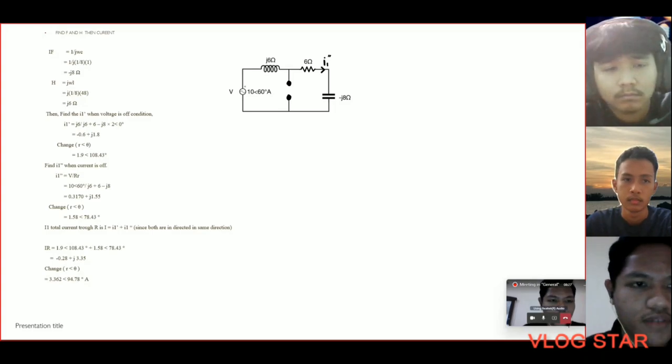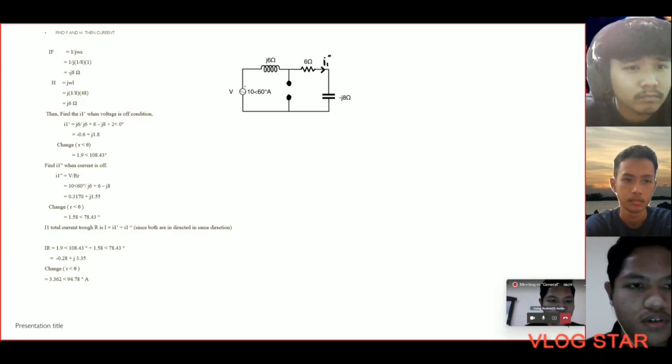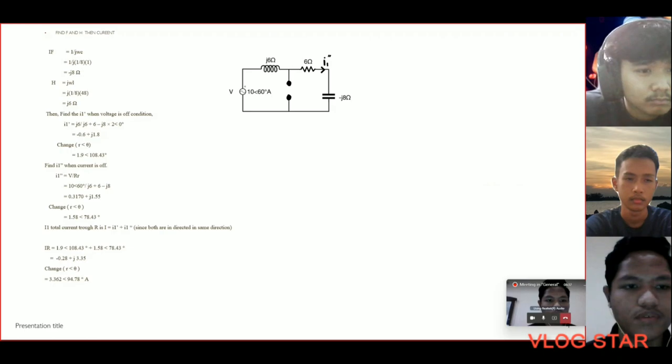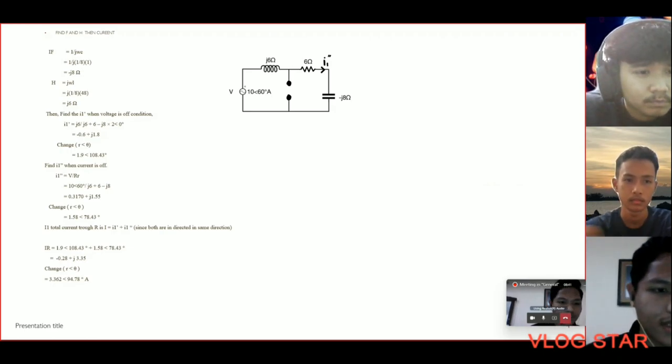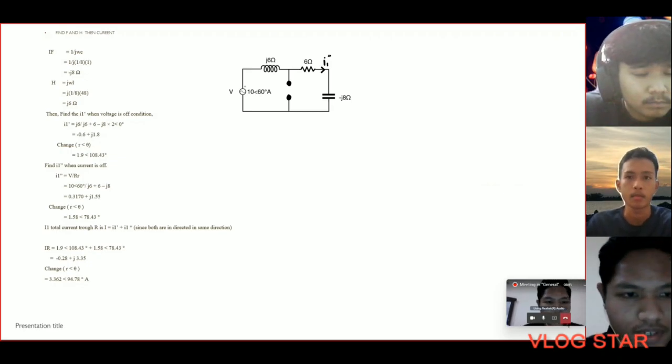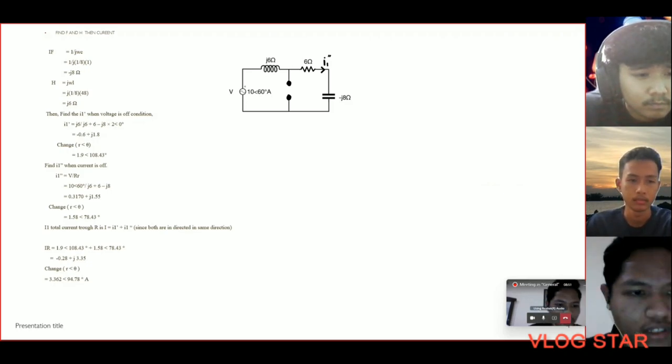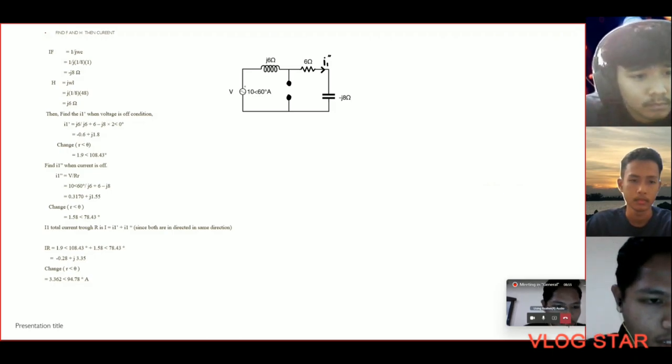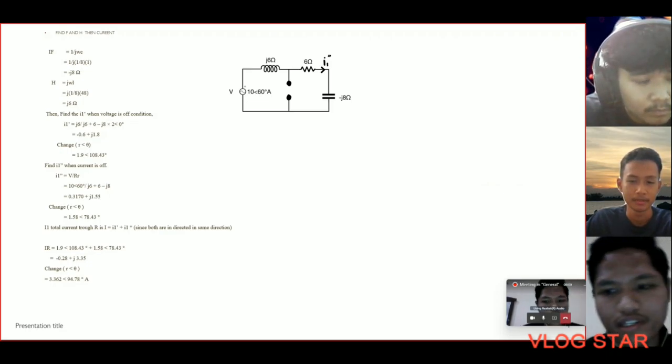To find I1 prime, we need to turn off the voltage source and calculate I double prime. We need to turn off the current source, and the total current is I1 prime plus I1 double prime. The answer is 3.362 at an angle of 94.78 degrees.